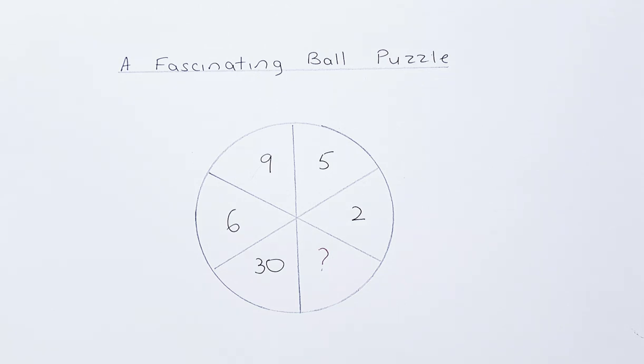So the second best option is to look at the numbers at the opposite end. 2 and 6, 5 and 30, and 9 and the question mark. To solve this, we will straight away give the solution without wasting any time.